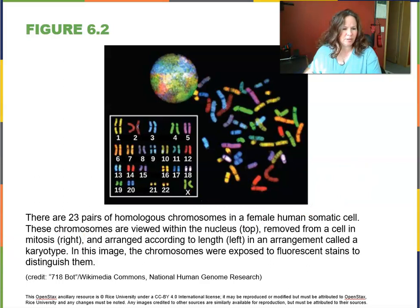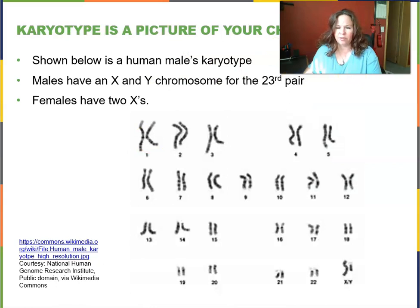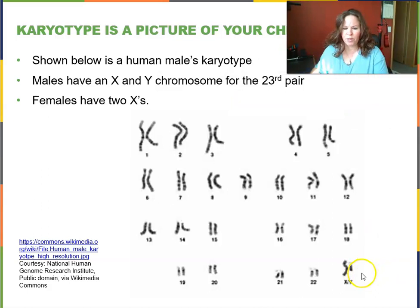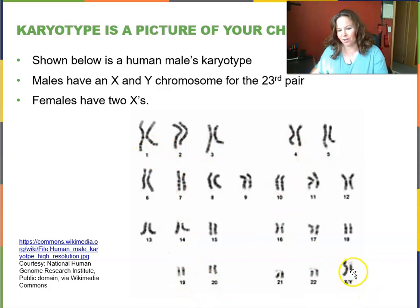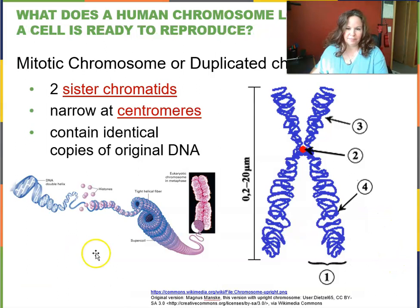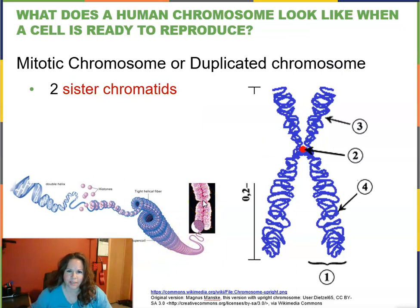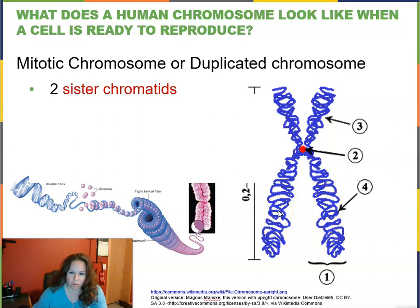A karyotype is a picture of your chromosomes. This next one is the karyotype of a male — a bit more realistic looking — and you can see them all lined up with an X and a Y at the end. A mitotic chromosome is ready to be divided in half to separate the sister chromatids. Each side is called a chromatid, and together they're called sister chromatids, which will be pulled apart upon cell division.